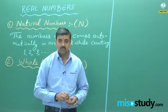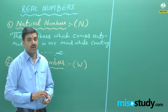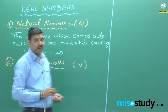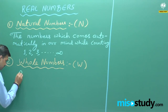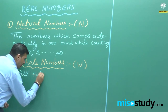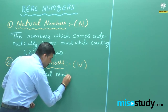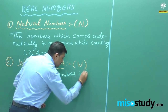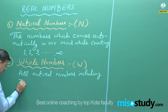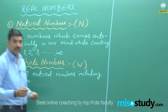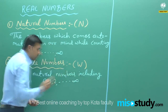Now, what are whole numbers? All natural numbers including 0 are known as whole numbers. What are they? 0, 1, 2, up to infinity.